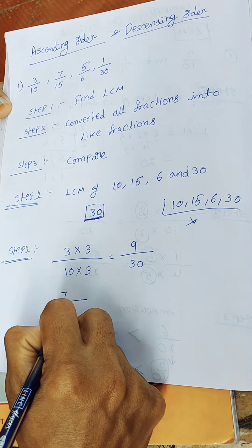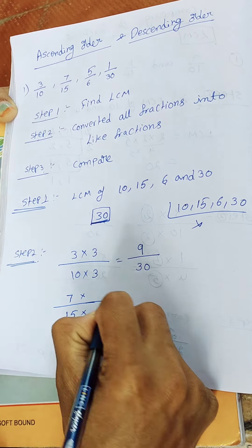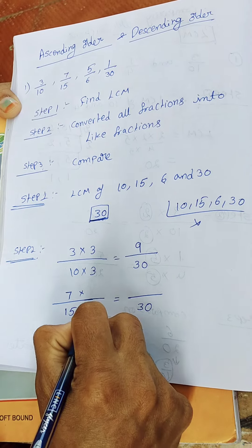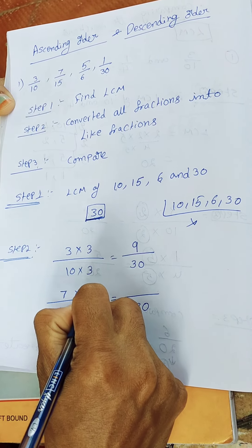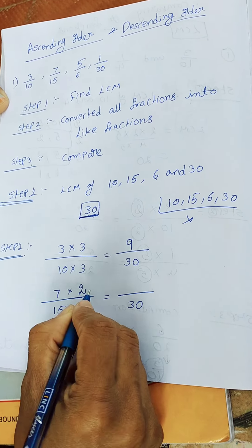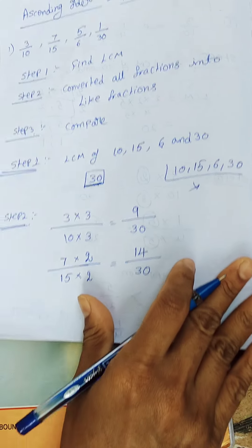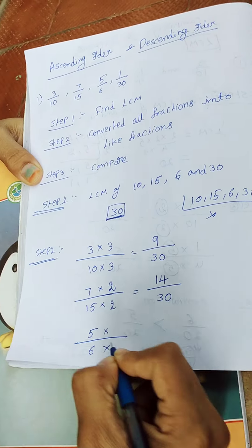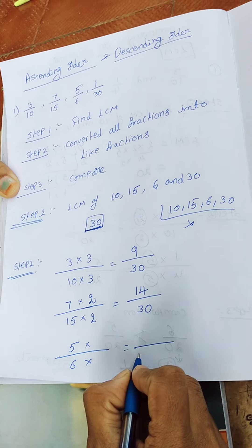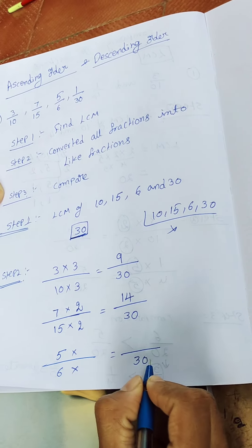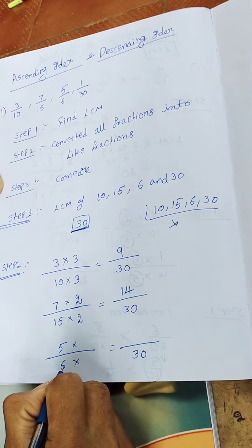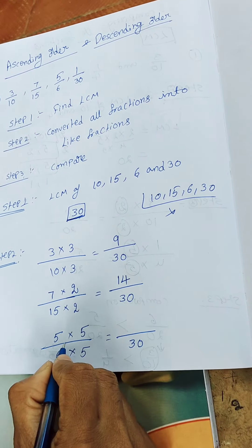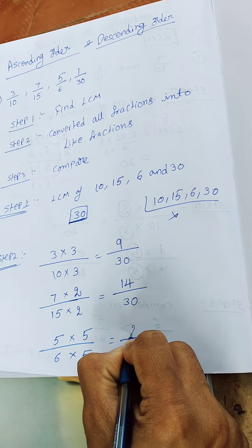The next fraction is 7 by 15. To get 30, we multiply 15 by 2, and the numerator is also multiplied by 2: 7 times 2 is 14, giving 14 by 30. Next is 5 by 6. To get 30, we multiply 6 by 5, and the numerator 5 times 5 is 25, giving 25 by 30.